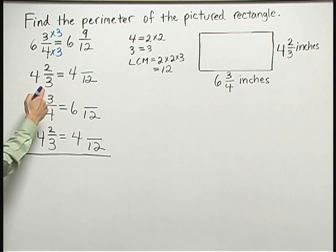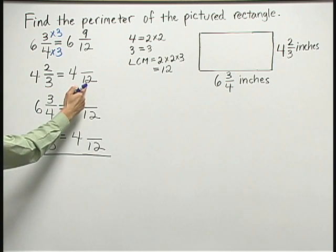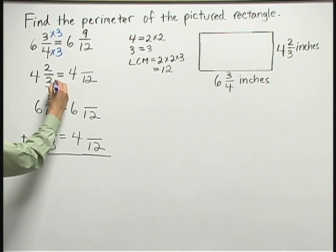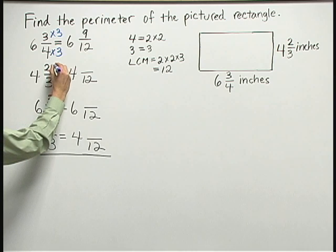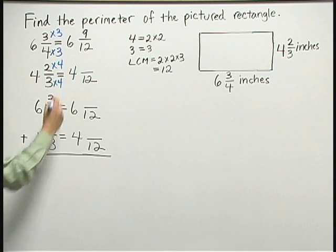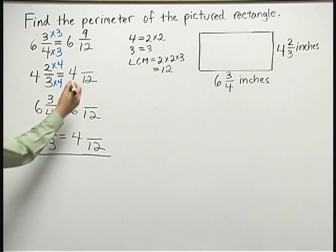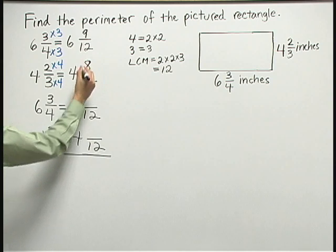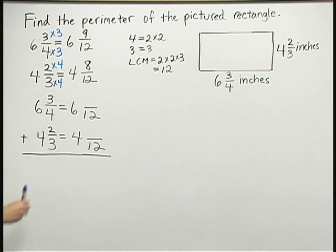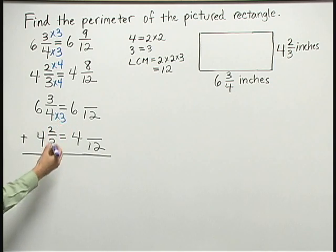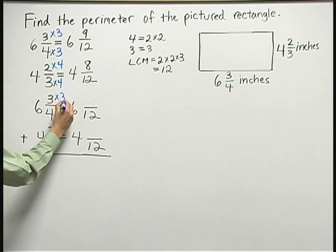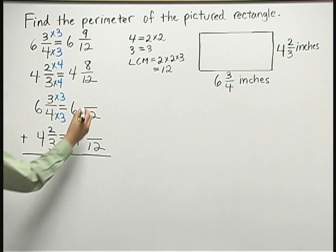And my second fraction, the three below, what do I multiply by to get twelve? Well, three times four is twelve, so up above I take two times four to get eight. And then I continue with my last two numbers here. In the third one, four times three is twelve, so three times three is nine. That's exactly the same as our first one.